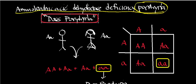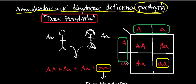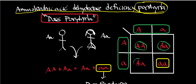Doss porphyria is an autosomal recessive porphyria. If you have a heterozygous individual — represented as capital A, little a — for this porphyria, they will not experience doss porphyria. When you do the Punnett square for two heterozygous parents, one-fourth of offspring will be homozygous dominant and won't express doss porphyria, two-fourths will be heterozygous carriers who won't express the disease, and one-fourth will be homozygous recessive and will express doss porphyria.